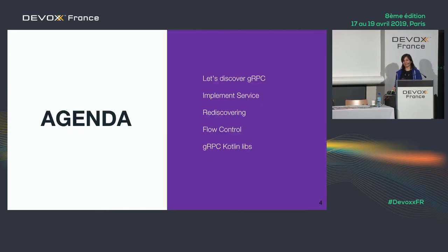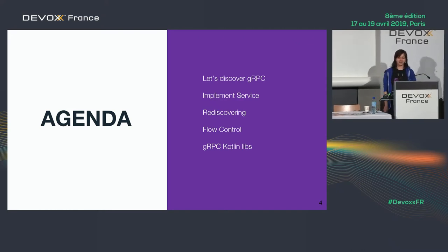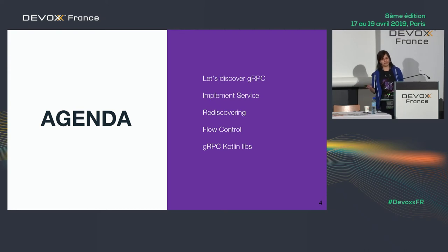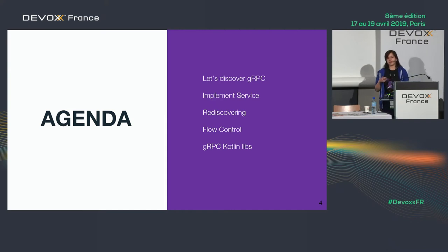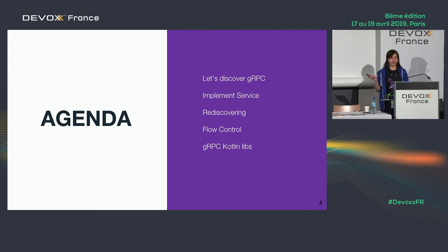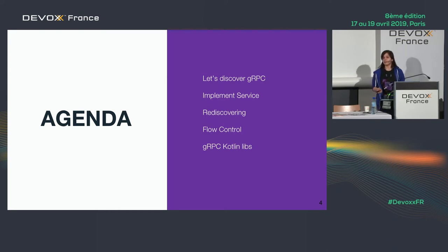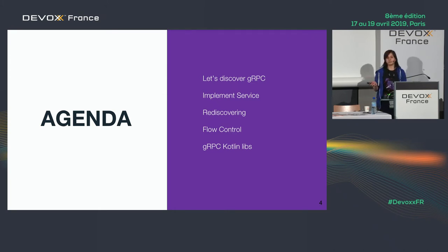That was a joke — I won't hit anyone, at least today. So today we'll talk about gRPC, what it is, then we'll implement a simple service, and after that we'll rewrite it with coroutines to understand the benefits. I'll also tell you about flow control and we'll discover some specific gRPC libraries for Kotlin that can help you and reduce your pain.